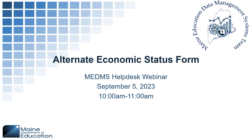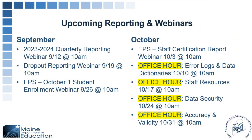Before we get into alternate economic status, I just wanted to give everyone a heads up about the upcoming webinars for the data team. We have a quarterly reporting webinar next Tuesday at 10 a.m. for attendance, truancy, bullying, and behavior reporting, which is due in October. The following week on the 19th, we'll have a dropout reporting webinar for federal dropout reporting requirements. We'll also have an EPS October 1 student enrollment webinar on the 26th at 10 a.m.